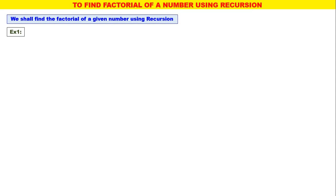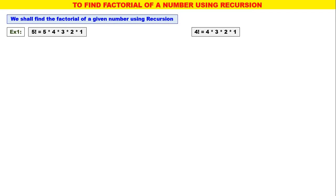Consider this example. What is 5 factorial? 5 into 4 into 3 into 2 into 1. Similarly, what is 4 factorial? 4 into 3 into 2 into 1. Now, in 5 factorial, instead of writing 4 into 3 into 2 into 1, we can write down 4 factorial. Therefore, 5 factorial is equal to 5 into 4 factorial.